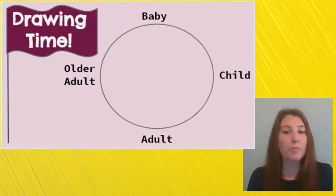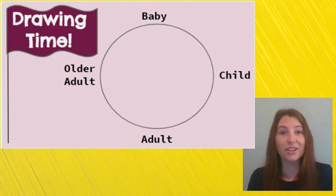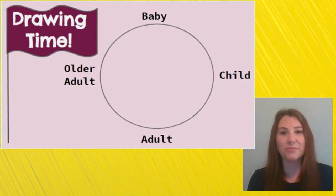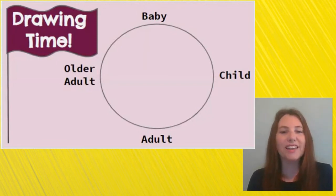Instead of writing the word baby, I want you to draw a picture of what you looked like when you were a baby. Then draw yourself as a child now, and draw yourself in the stage of adulthood — that one you're going to have to imagine what you might look like when you're that age. So draw yourself in all those different stages. When you're all done, come back and let's finish up this video. Go ahead and push pause and go draw.